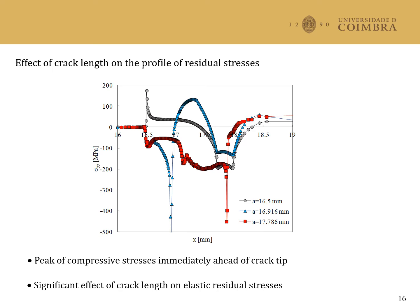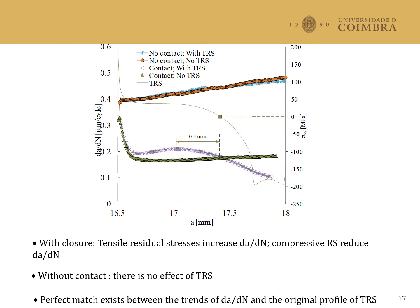This slide shows the predictions of da/dN. Without thermal residual stresses and with contact of crack flanks, represented by the green triangles, there is an initial decrease of da/dN associated with the formation of residual plastic wake and the appearance of crack closure. After stabilization, there is a progressive increase of da/dN associated with the increase of crack length. The introduction of thermal residual stresses produces an increase of da/dN in the presence of tensile residual stresses, and a decrease of da/dN in the presence of compressive residual stresses, as could be expected. The profile of residual stresses at the initial crack tip position is represented, and the black square indicates the transition from tensile to compressive residual stresses.